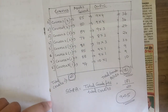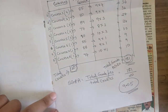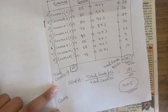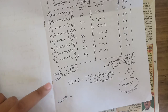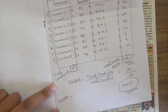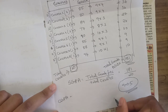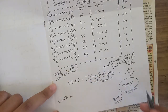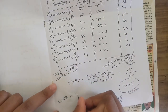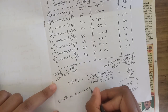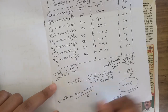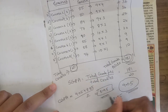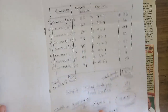To calculate CGPA: SGPA is only for one semester, while CGPA covers two semesters of one year. If you got 9.05 in one semester and 8.85 in the next semester, the CGPA formula is: add the two SGPAs and divide by 2. So CGPA = (9.05 + 8.85) ÷ 2 ≈ 8.95.